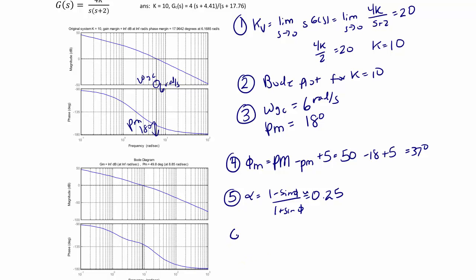Step 6 is to find the magnitude on the Bode plot where the phase angle is going to be maximum. This is equal to 1 over the square root of alpha, or 2.